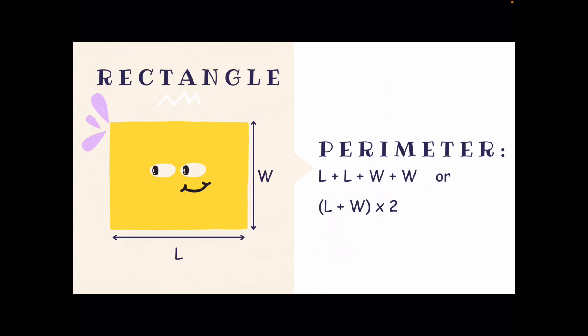And to solve for the perimeter of a rectangle, we use the formula length plus length plus width plus width, or we can use the formula of length plus width, and then multiply that by 2.